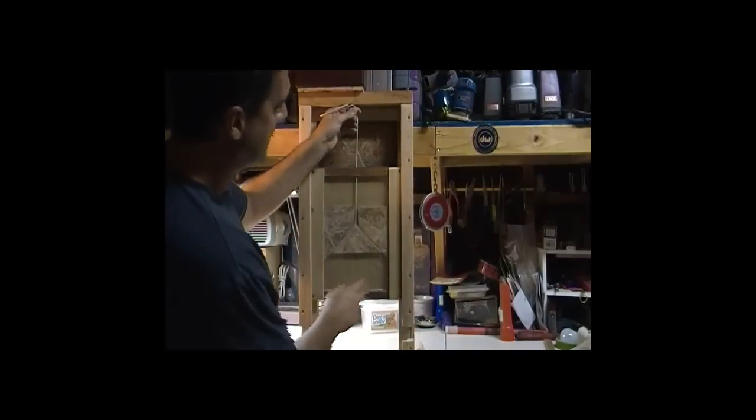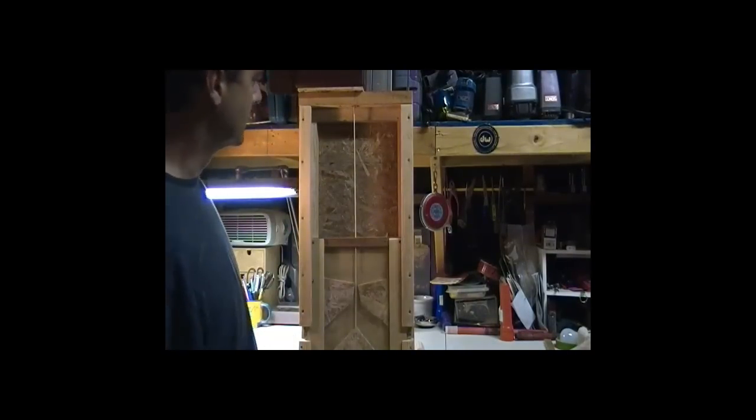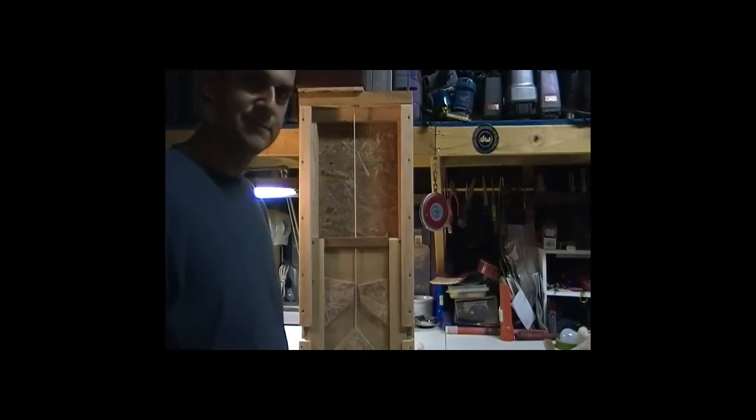It pulls up this plexiglass homemade door so you can see what's going on. And when it drops below, the locks engage and the door is shut. The chickens are safe, so pretty cool.